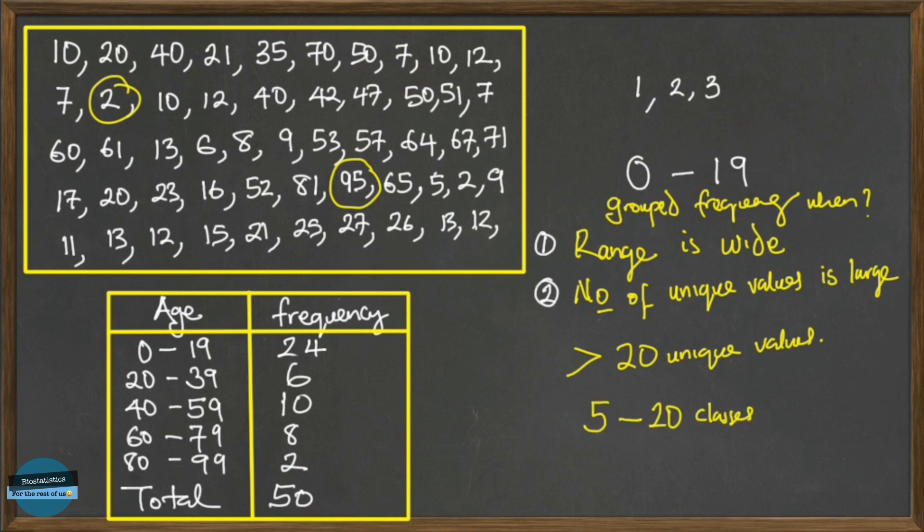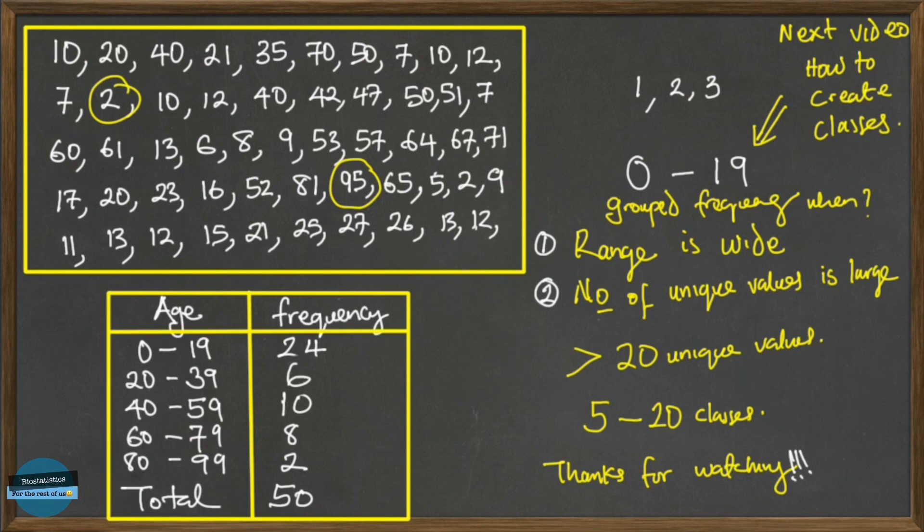And then when you are putting up a grouped frequency table, we expect that the number of classes should be in between 5 and 20 classes. Thank you very much for listening, thank you for watching. In our next video we are going to be showing you how to construct the classes in a group frequency distribution.